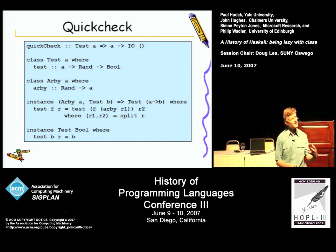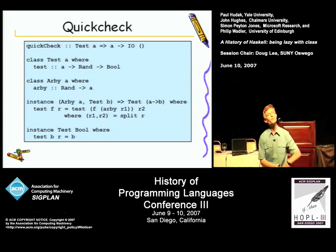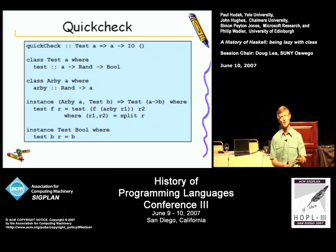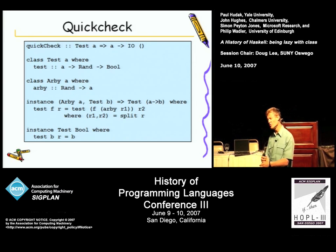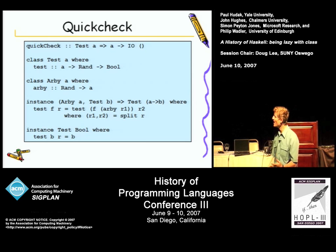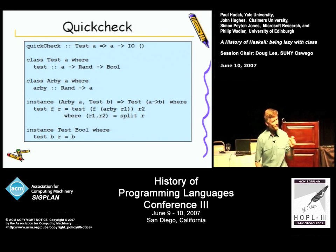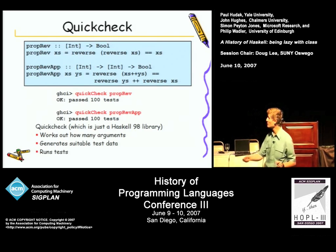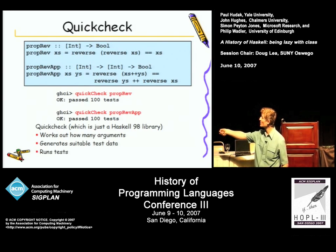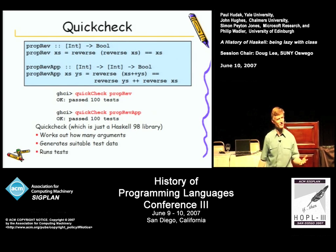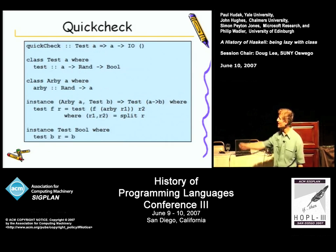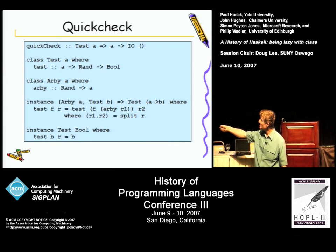Why Random? Well, we need to feed it random numbers — QuickCheck needs to feed it random numbers in order to test it at different values. Now the interesting thing is how do you test a function value? Because the arguments we're going to give it are functions, so we need to give an instance for Test at arrows.